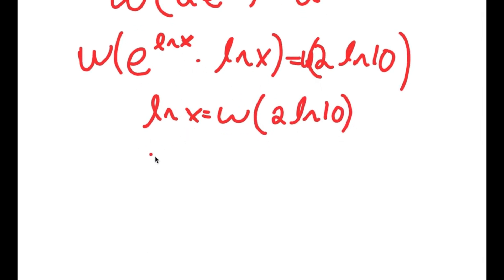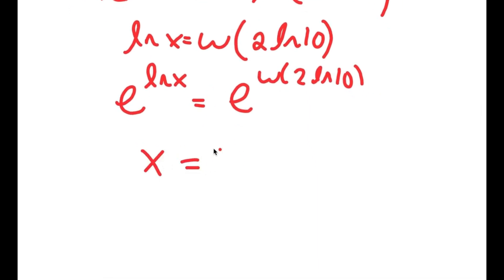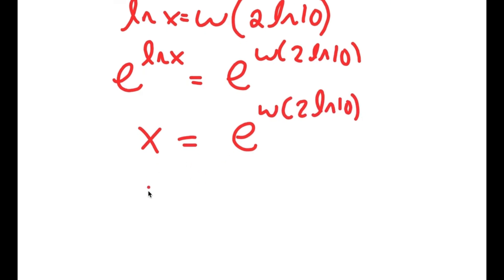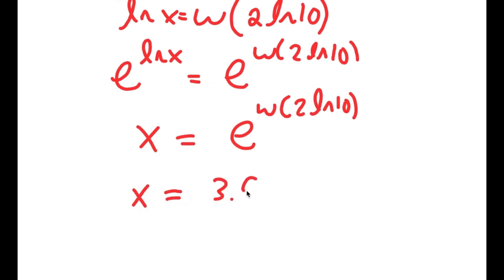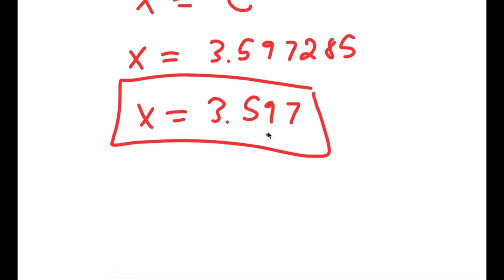And now if I take e to the power of both sides, e to the power of ln x equals e to the power of W of 2 ln 10. And e to the power of ln x equals x. So x is equal to e to the power of W of 2 times ln 10, which equals approximately 3.597.